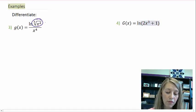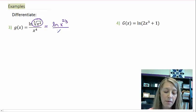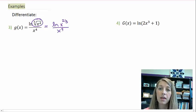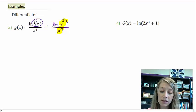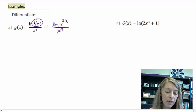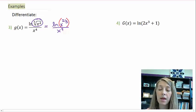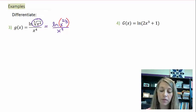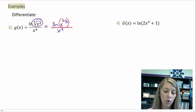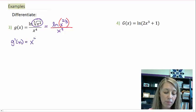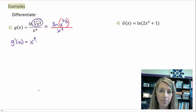On the first one, I'm going to rewrite this as x to the 2 thirds power — that might make it a little easier to see. Note that you cannot reduce these, because in the top, this is natural log of x to the 2 thirds, so it is a part inside the function of natural log. The first thing we have to do is the quotient rule. So g prime of x equals the original of the bottom times the derivative of the top.